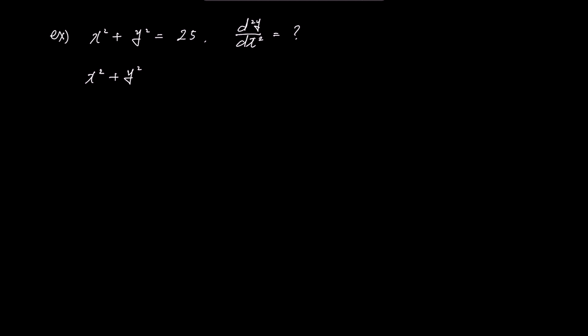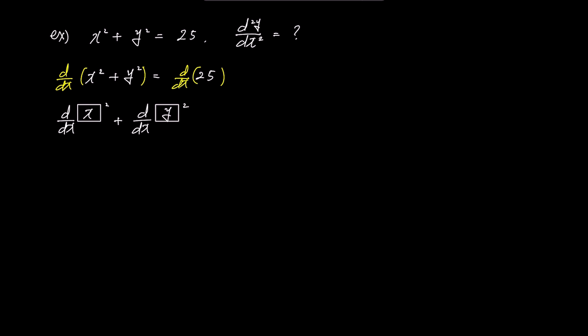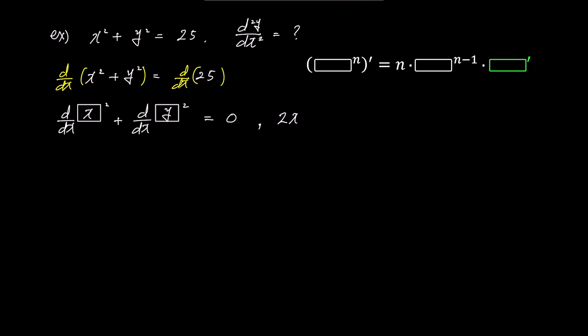First, we'll differentiate both sides with respect to x to find dy over dx. Expanding the left side, it becomes dx squared over dx plus dy squared over dx, while the right side remains 0. The derivative of box squared is 2 times box times box prime. When box contains x, it becomes 2x times dx over dx. And when box contains y, it becomes 2y times dy over dx.